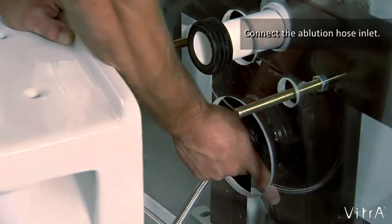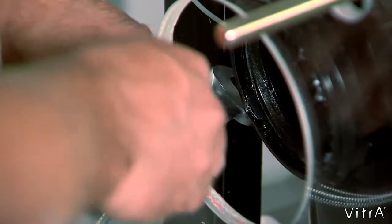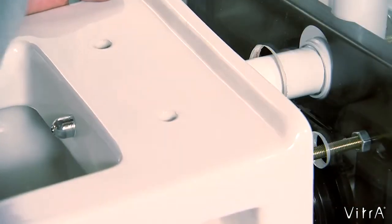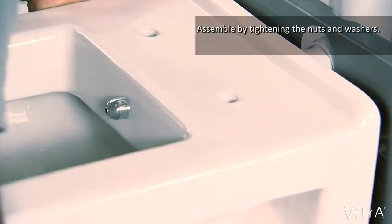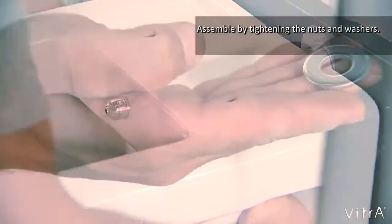Connect the ablution hose inlet. Fix the water closet pan mounting holes onto the studs on the wall. Assemble by tightening the nuts and washers.